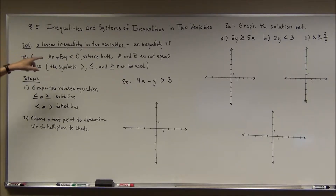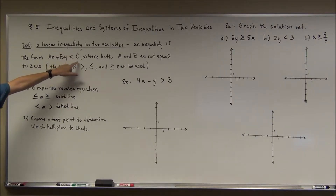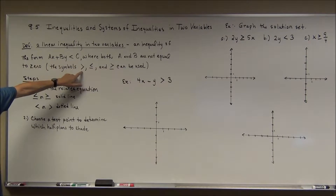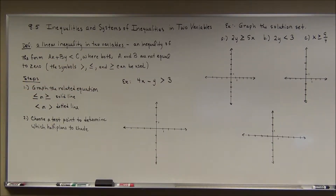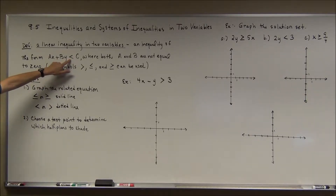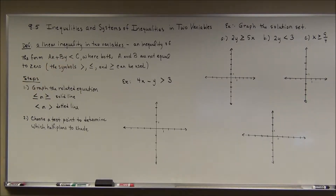A linear inequality in two variables is any inequality in the form ax plus by less than c, where both a and b are not equal to zero. You could also have greater than, less than or equal to, or greater than or equal to. If we had equality, we would have the graph of a line — ax plus by equals c is the standard form. This boundary line is what we find, and then we use it to determine where our solutions lie.